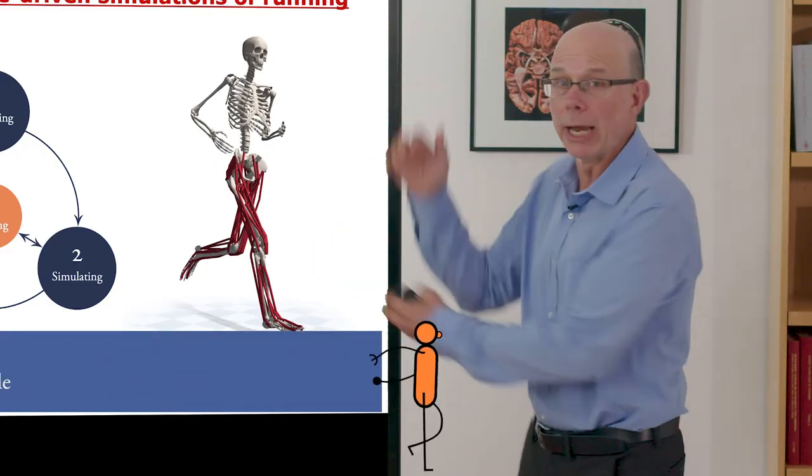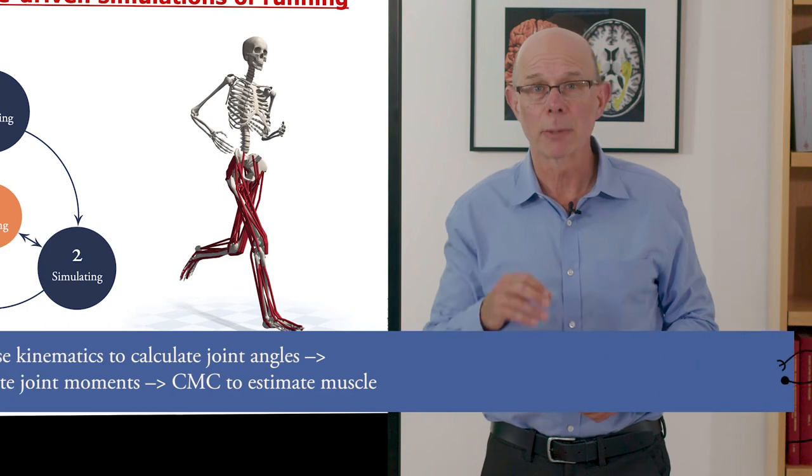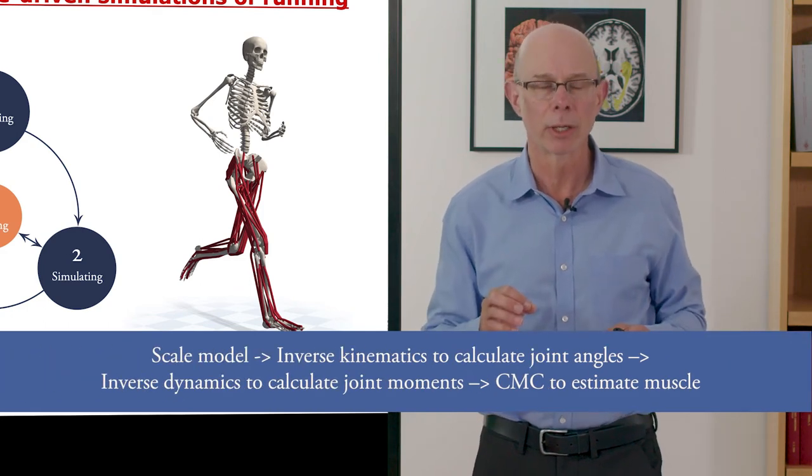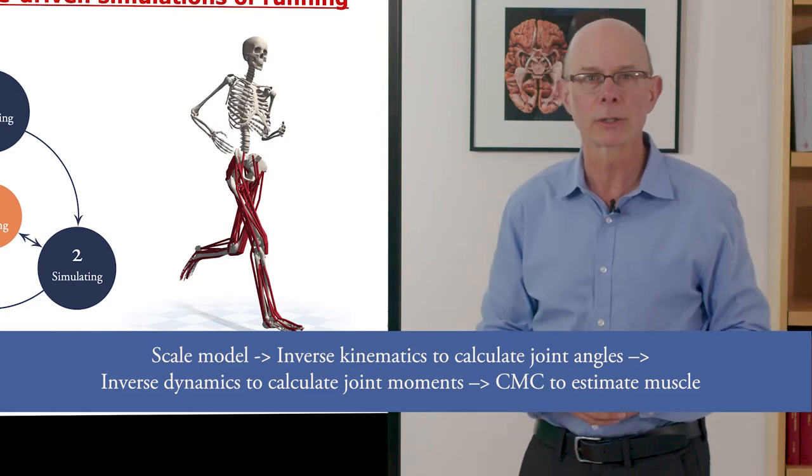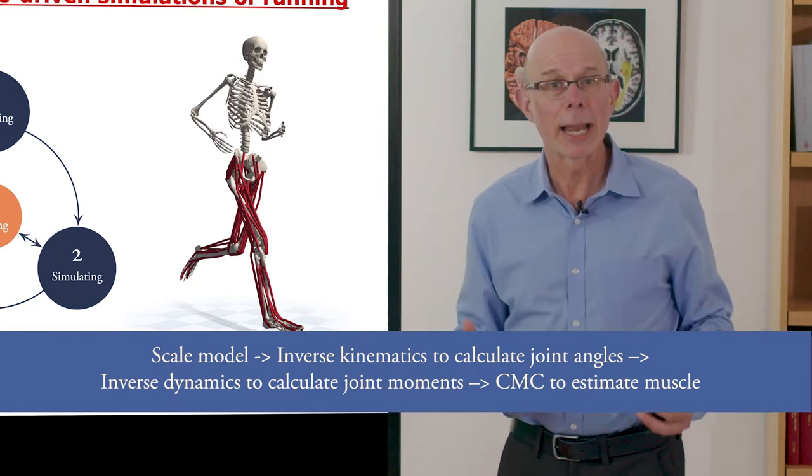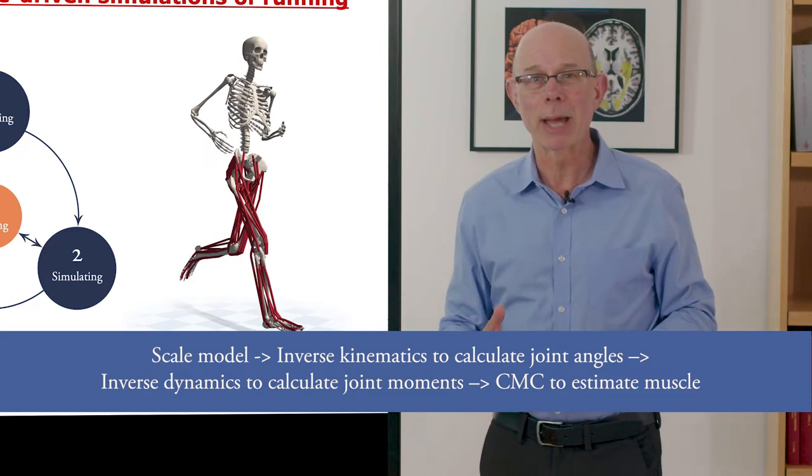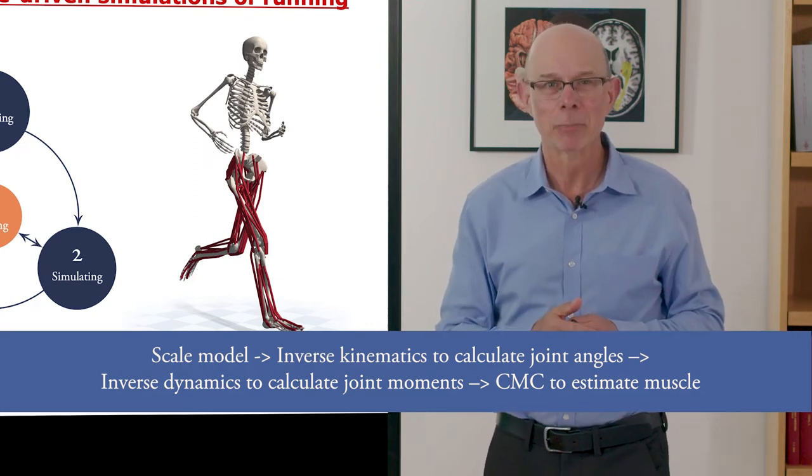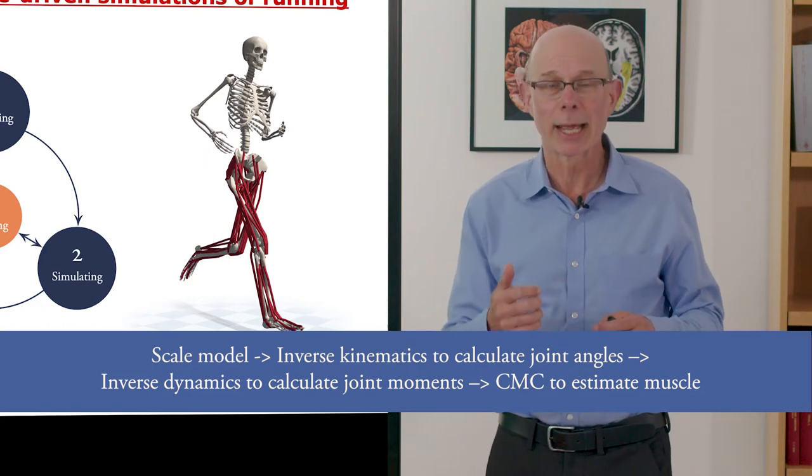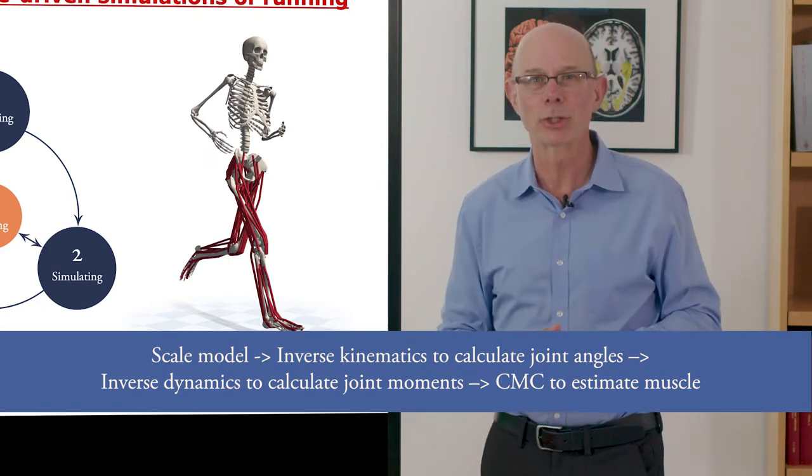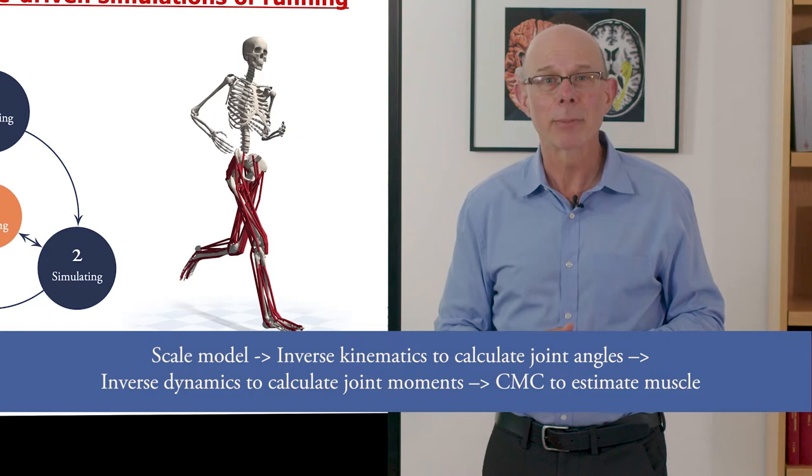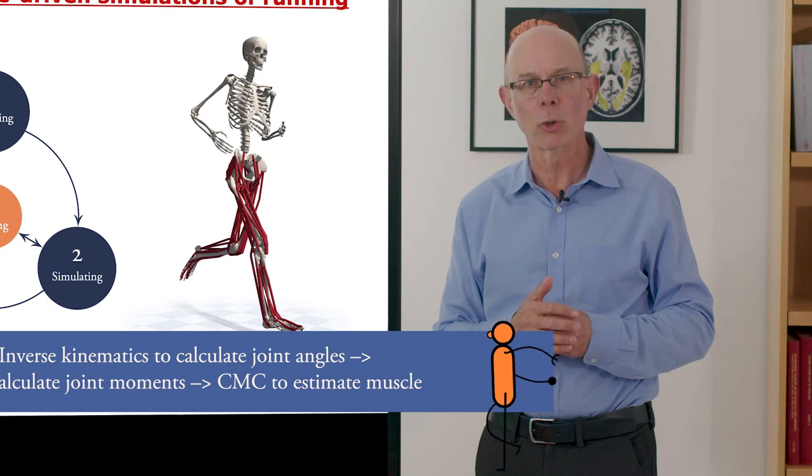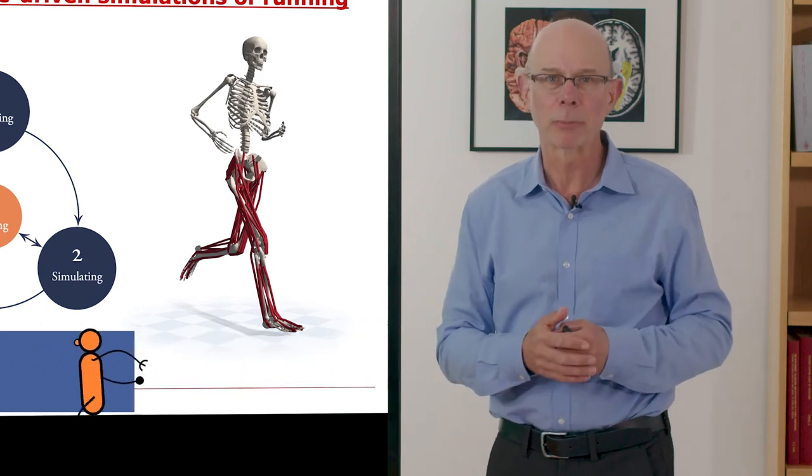Sam then scaled this generic musculoskeletal model to match the size of each subject based on the marker locations that we placed at anatomical landmarks. We then calculated joint angles over the gait cycle using inverse kinematics using the algorithm that you studied in chapter 7. We then did inverse dynamics to calculate joint moments like we described in chapter 8, and then estimated muscle activations needed to generate those moments using the computed muscle control algorithm that you can find in chapter 10.